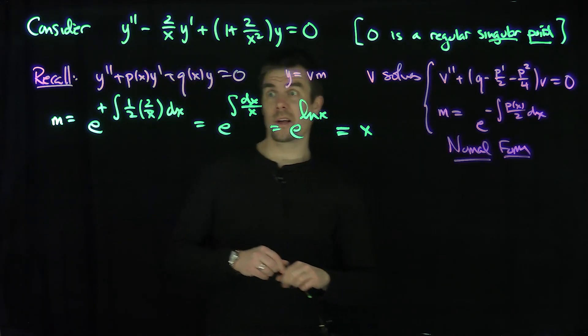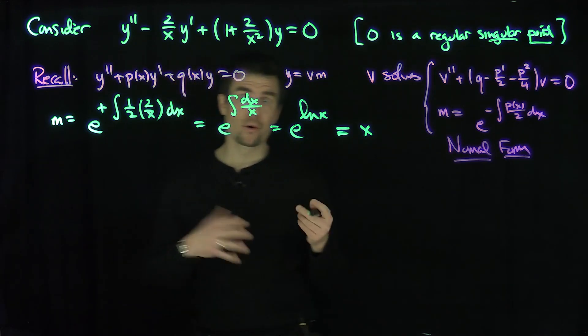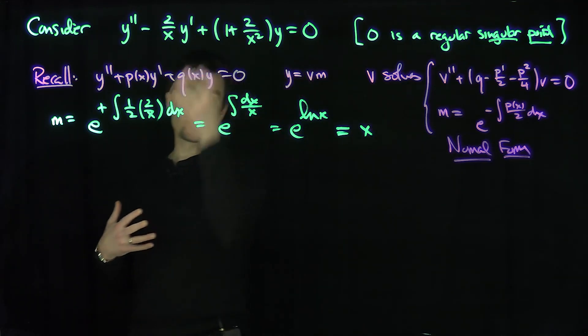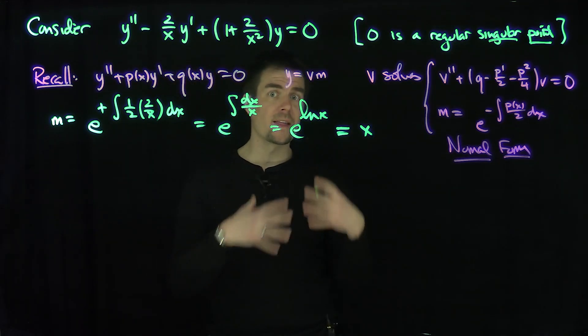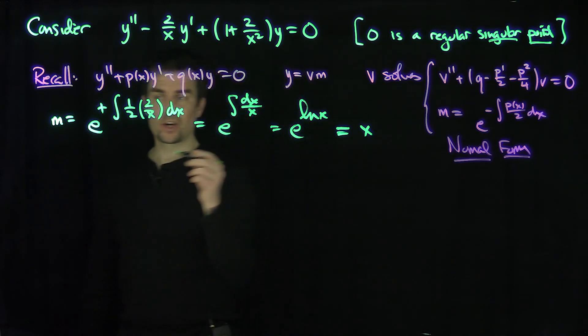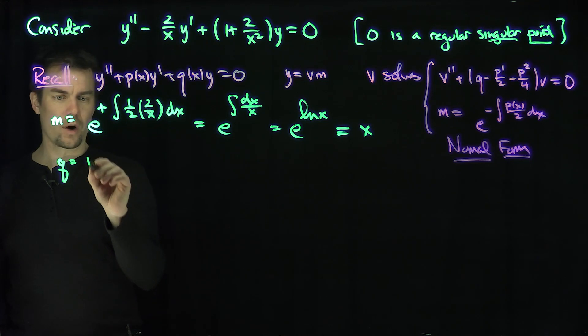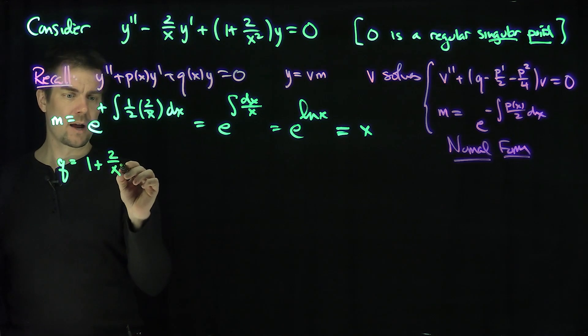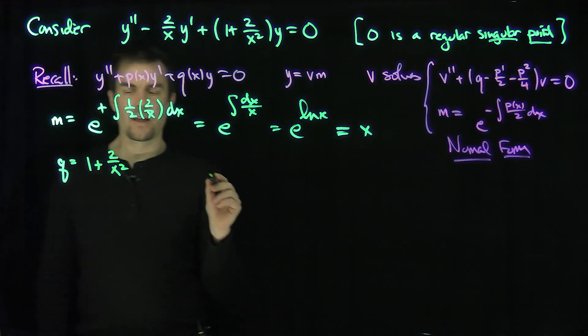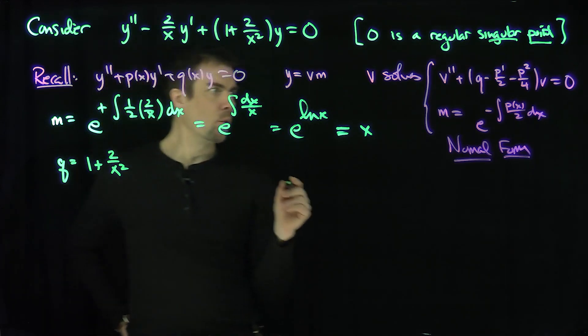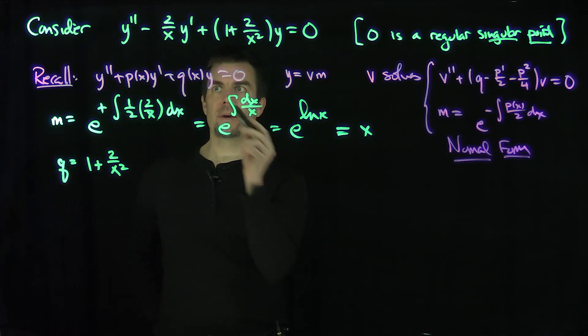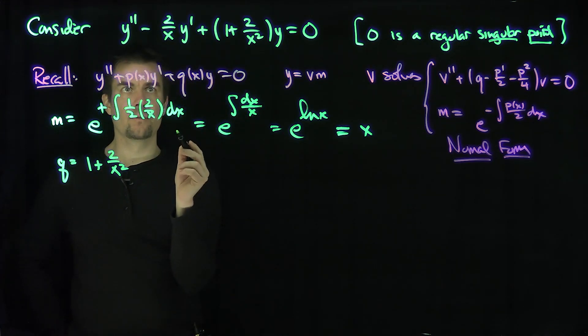Now what will my normal form look like? This could still be a mess. We don't know a priori this is going to be easier. But for this particular case, I've constructed the function in a simple way that will make it work out nicely. My q is 1 + 2/x².